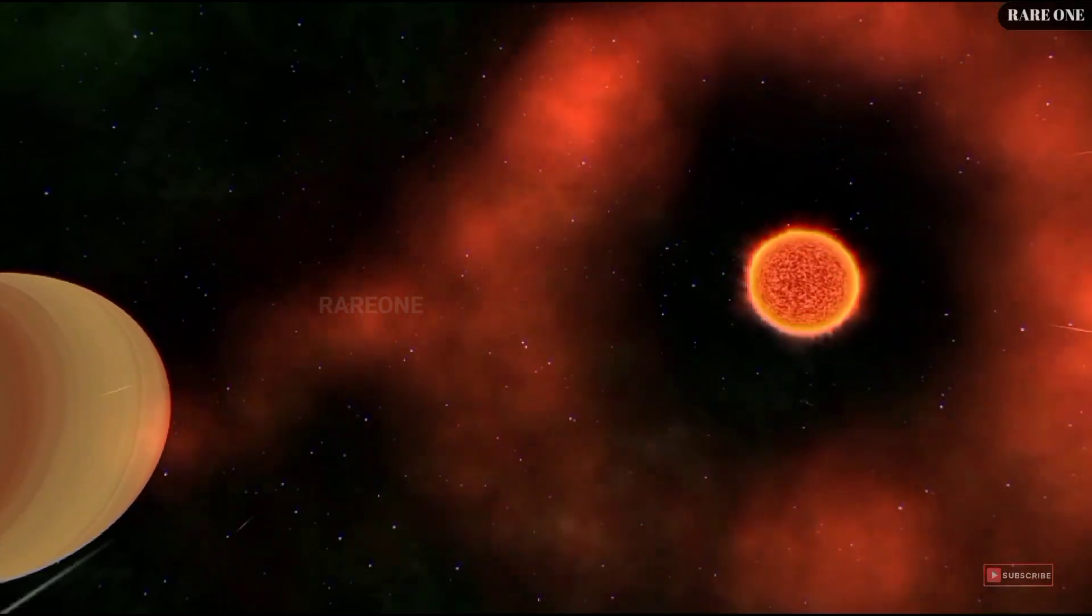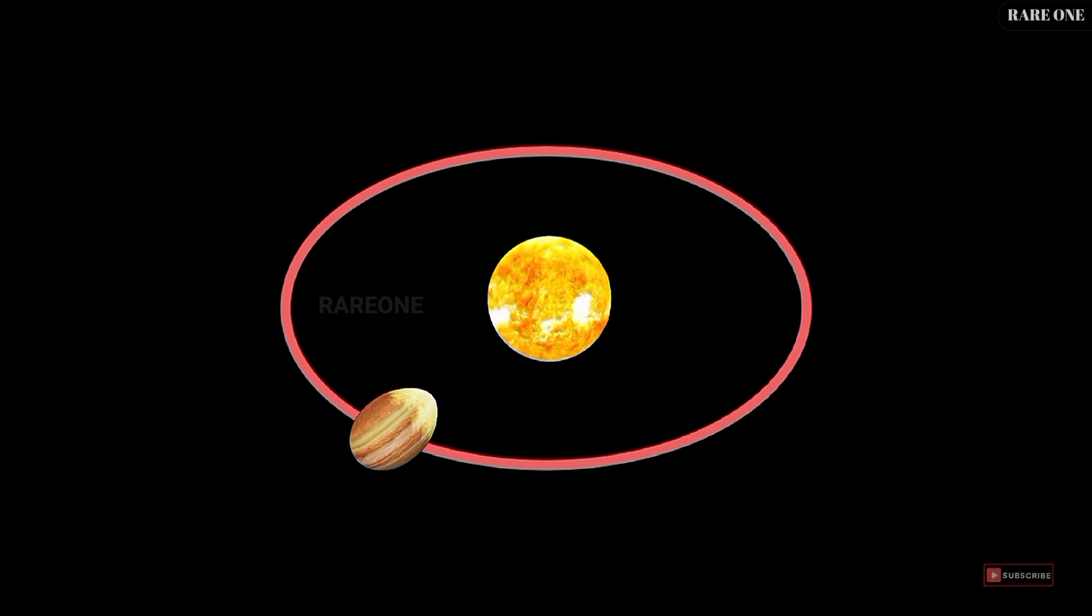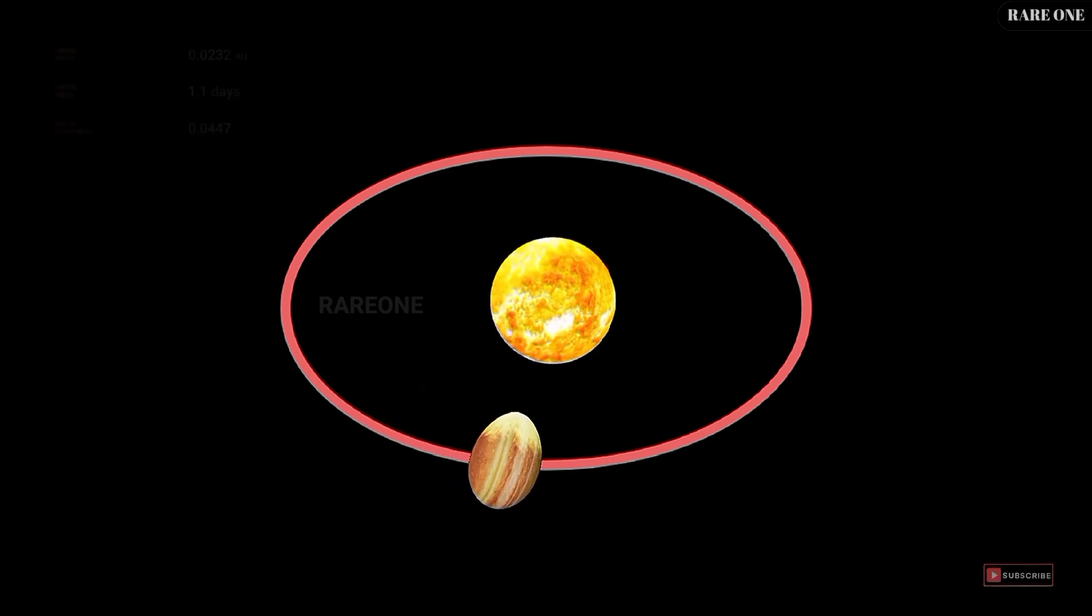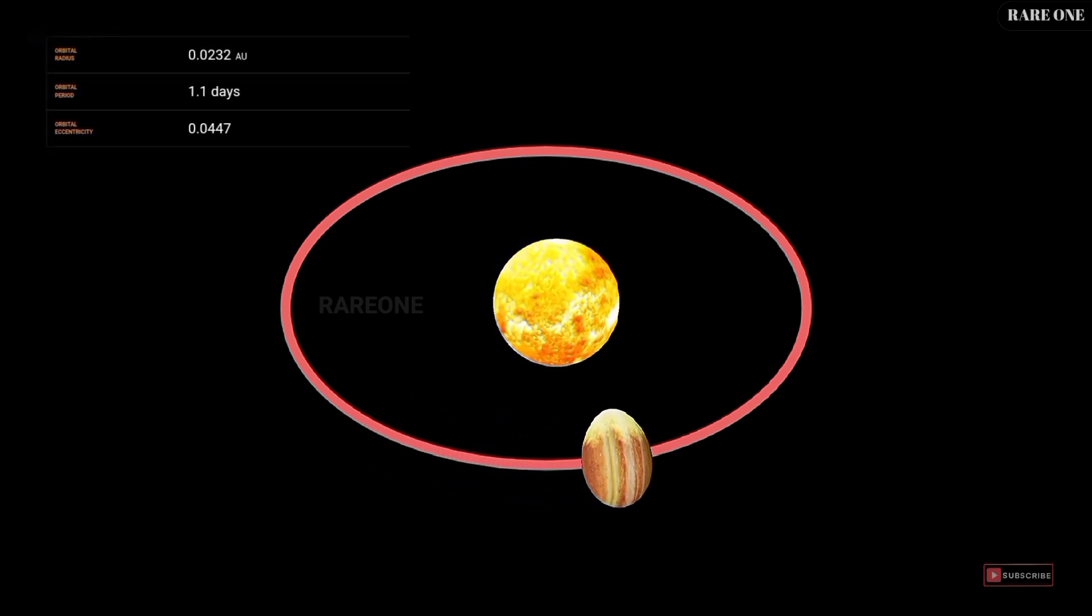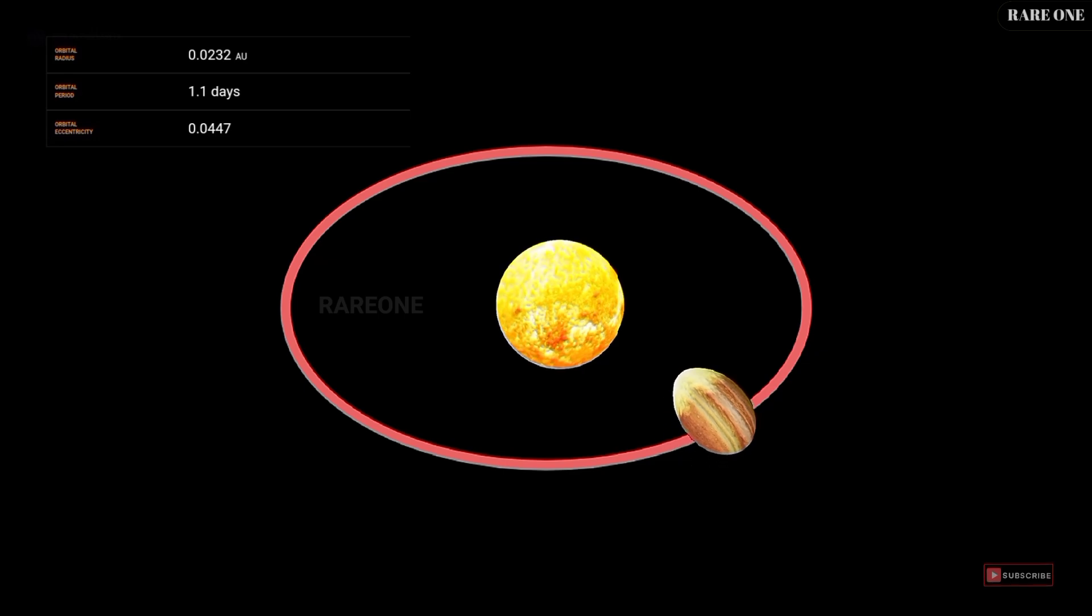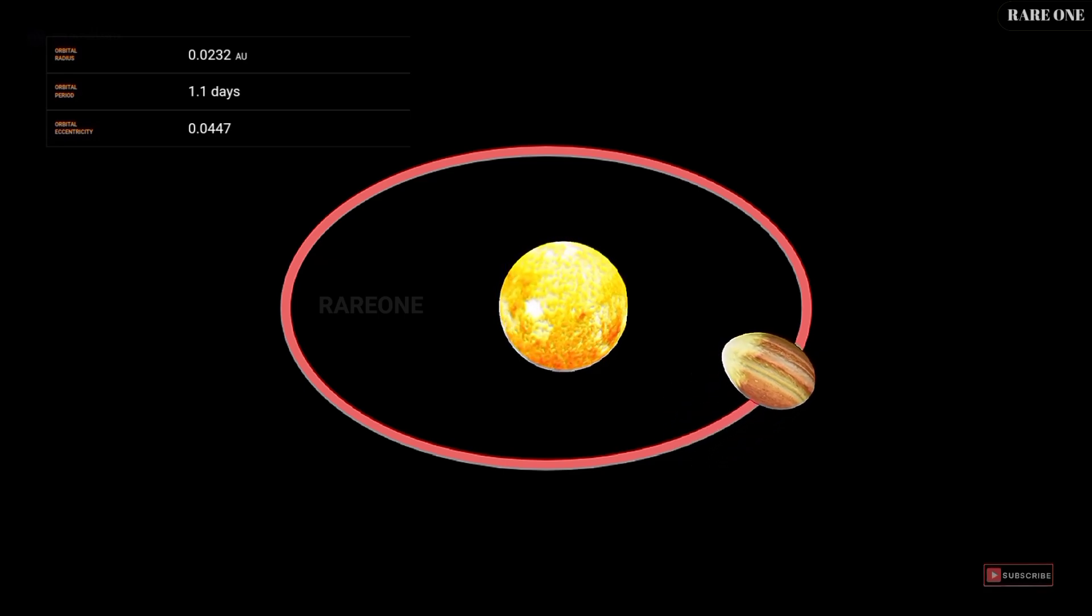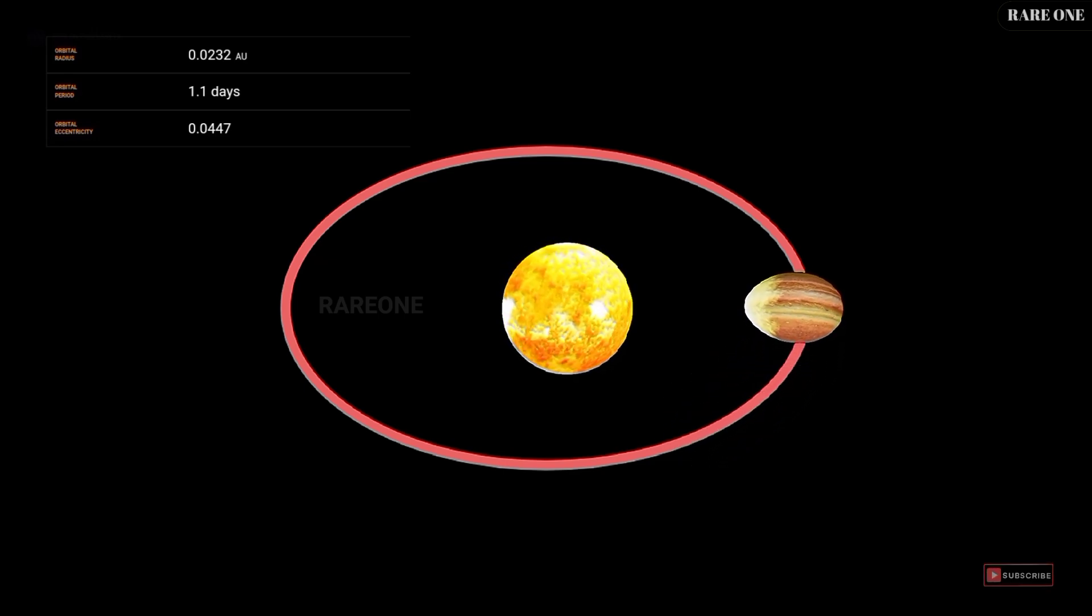WASP-12b is a hot Jupiter, a gas giant that orbits incredibly close to its parent star. In fact, it takes this alien world a mere 1.1 days to complete a full orbit around its sun. This extreme proximity has dire consequences for the planet.